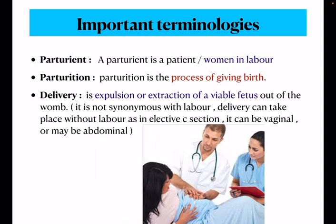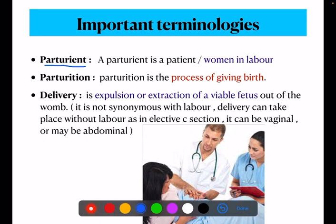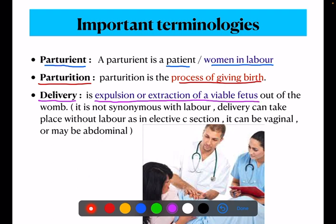Next, there are some important terminologies. First is parturition — parturition is the process of giving birth. The woman in labor is the parturient. Next is delivery. What is delivery? Delivery is the expulsion or extraction of a viable fetus out of the womb.